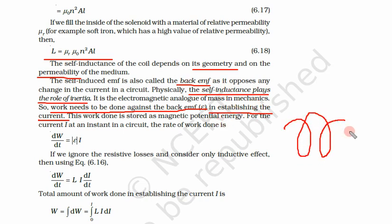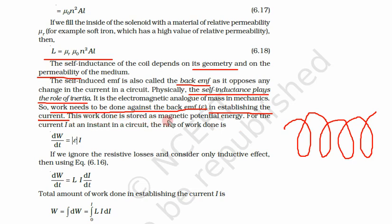If we have a coil and want to produce some current, we have to do some work; otherwise a back EMF will be generated which will oppose the current. This work is stored as magnetic potential energy. For current i at an instant in the circuit, the rate of work done is given by a formula.